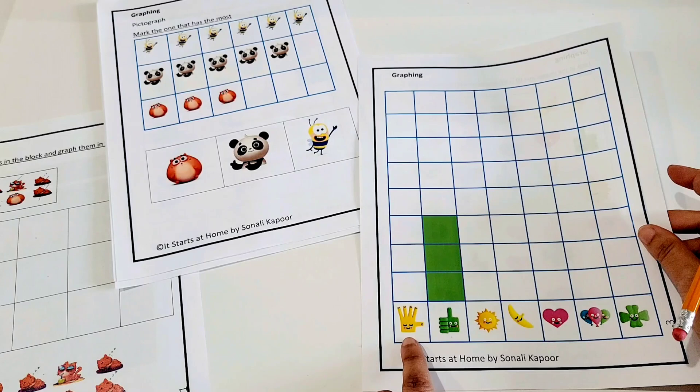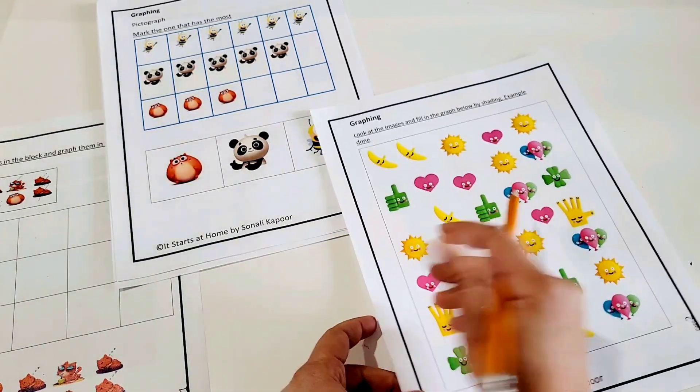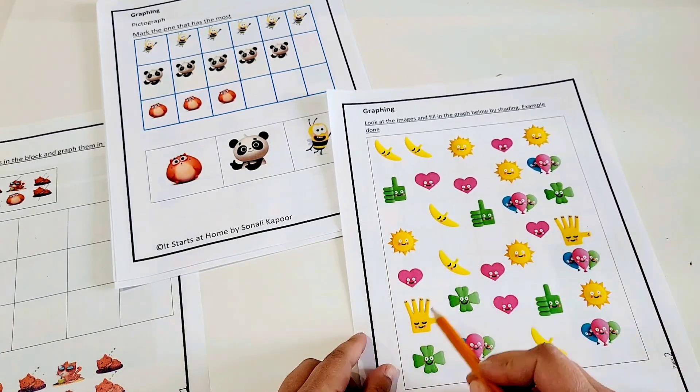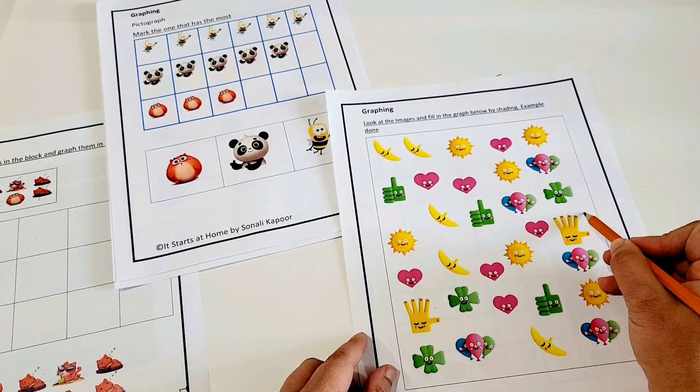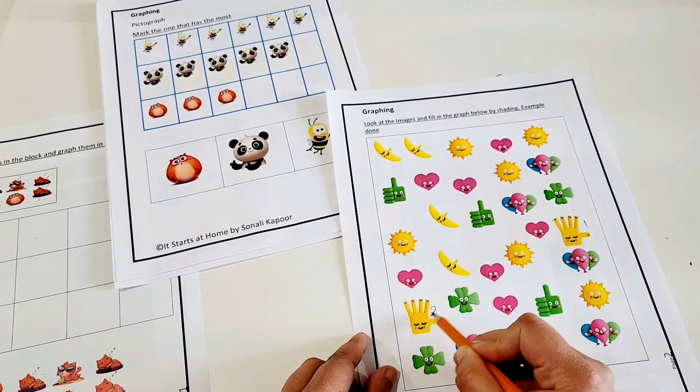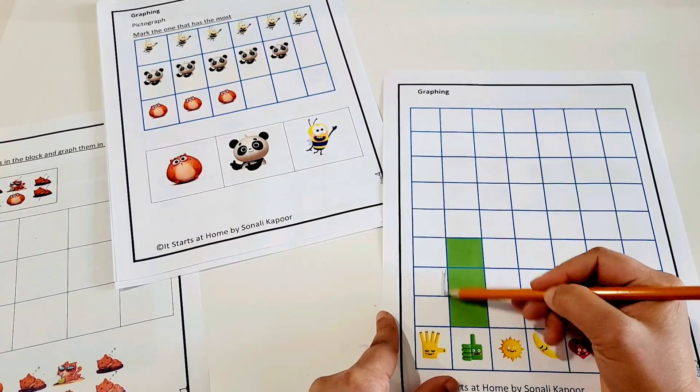So in the same manner, the child has to figure out this picture. How many times does it appear here? 1 and 2. Always tell the child to either cross or circle or write 1 and 2 maybe on top of it, and then they will be able to shade the bar.